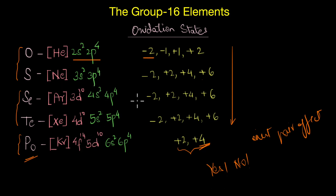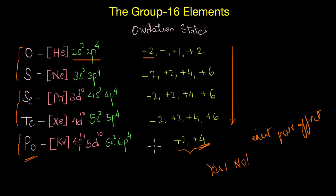The more we learn about elements, the more we see discrepancies, anomalies, and exceptions — but there's nothing to be afraid of, because if you understand the inherent nature of an element, all these exceptions seem very logical. For instance, why does oxygen not show a +6 oxidation state? It's logical — being the second most electronegative element, it cannot lose so many electrons. With that in mind, let's look at some anomalous behavior of oxygen in the next video.